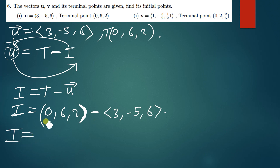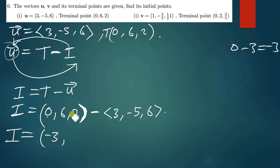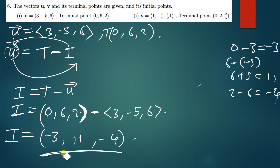0 minus 3 gives us negative 3. Then 6 minus negative 5: a negative and a negative gives us positive, so that's 6 plus 5 which equals 11. Then 2 minus 6 gives us negative 4. So the initial point is (-3, 11, -4).